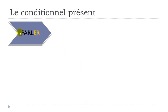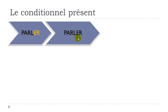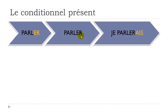Let's take the first example: parler, which belongs to the first group of verbs. In French we have three groups, and the first group ends with ER, like here. These verbs are regular — so you don't have to change your verb. You keep parler as it is, and then you add the endings. For JE, the ending will be AIS, so you get je parlerai.